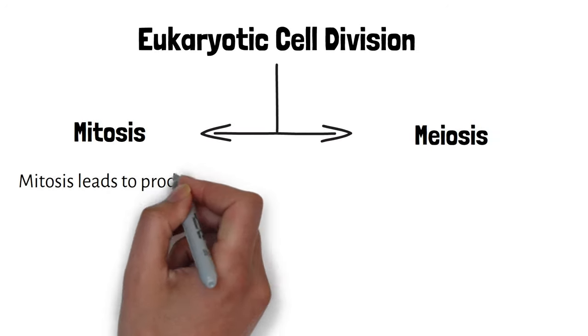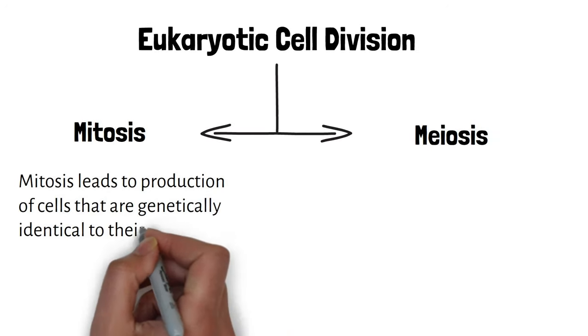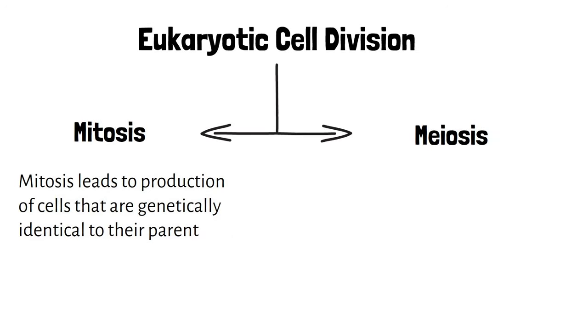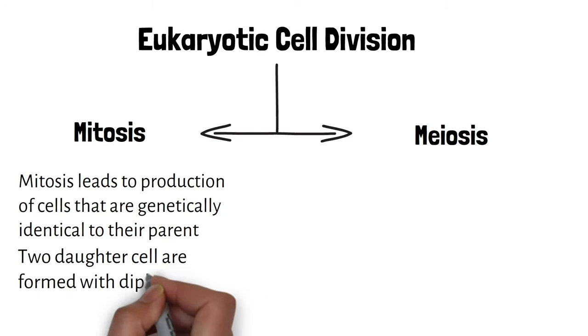Mitosis leads to production of cells that are genetically identical to the parent cell. Thus, two daughter cells are formed with diploid (2n) number of chromosomes.